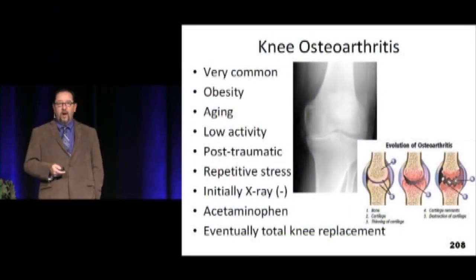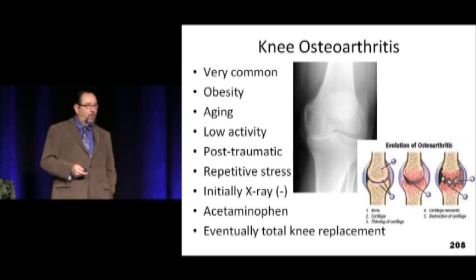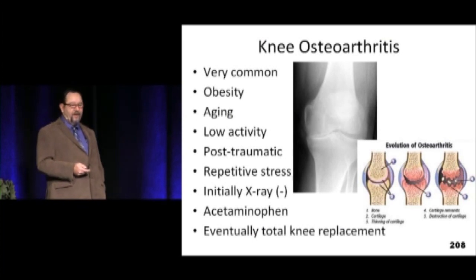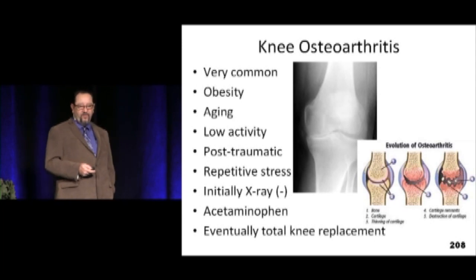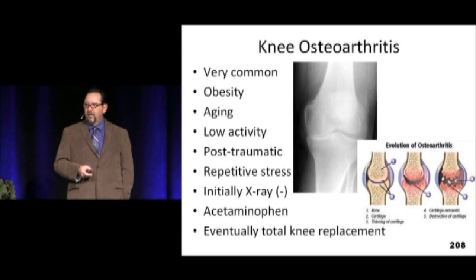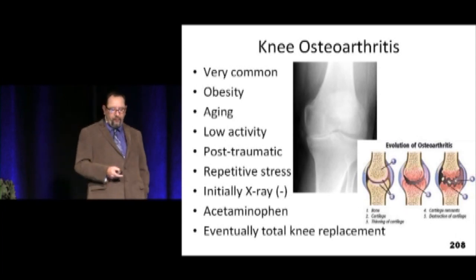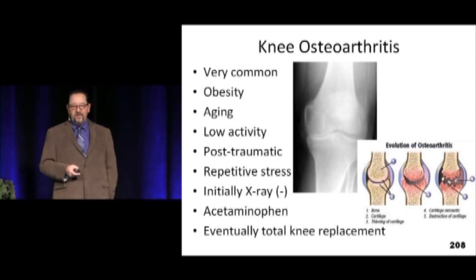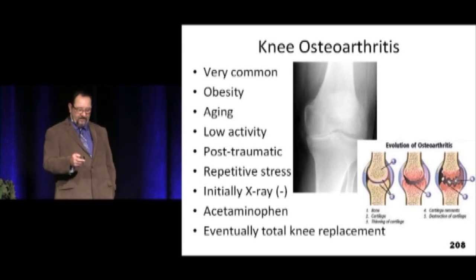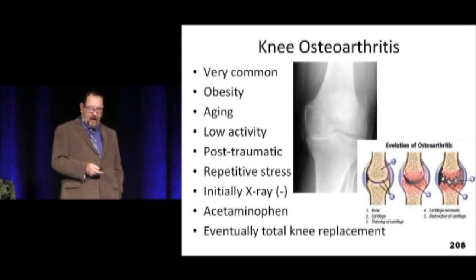Osteoarthritis of the knee is really common. We're an aging and generally heavier population, so obesity and aging are major factors. Eventually you get loss of the joint space, as shown on this x-ray — that's a typical finding. Treatment: it's not primarily an inflammatory condition, so acetaminophen is preferred over Motrin or ibuprofen. Eventually they may need replacement, but we try to hold off as long as possible.